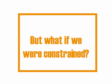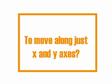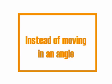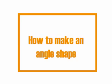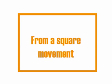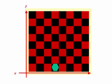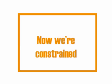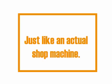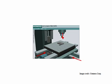Now let's say we were constrained to moving only along the X and Y axes — that is, only left to right or forward and back, instead of moving on an angle like in checkers. In that case, we'd have to figure out how to make an angled shape using just square movements — moving along the X axis and then along the Y axis to create the angle pattern. This is how we constrain ourselves just like an actual shop machine.